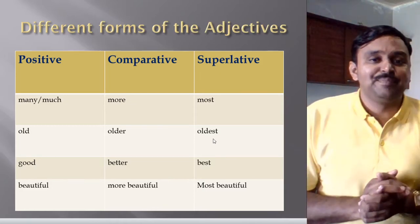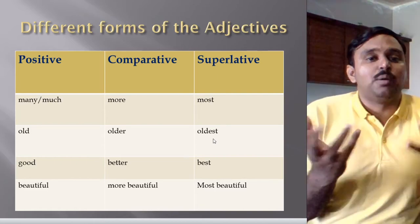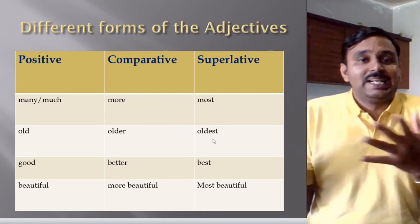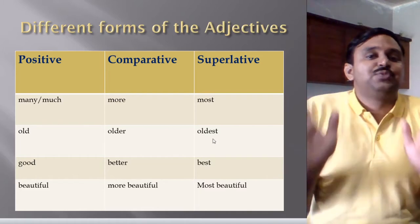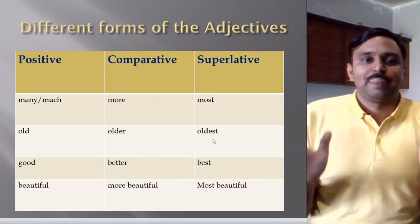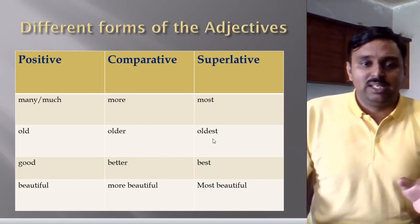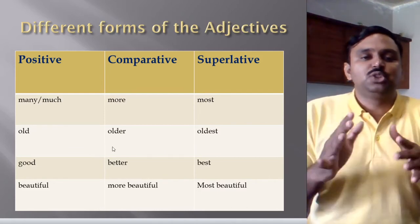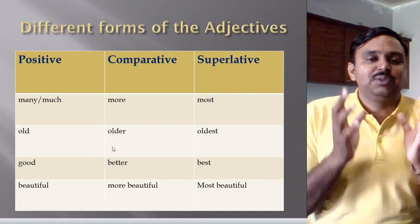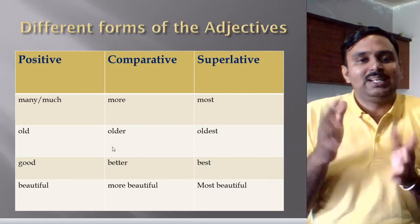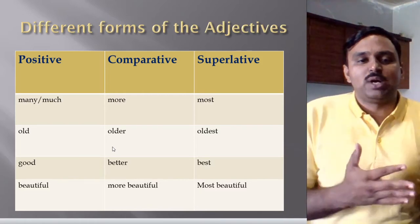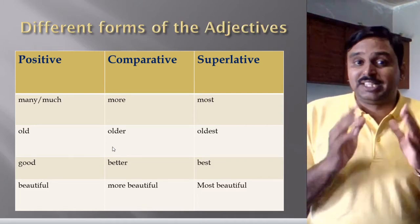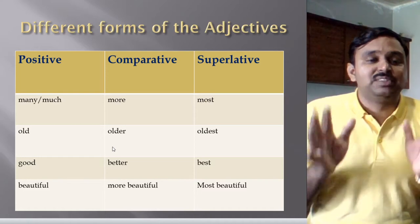Some children may get confused with verb forms. For example, 'go, went, gone' or 'talked, talked, talked' — these are verb forms, and adjective forms are different. Do not compare them together. Don't say that 'go, went, gone' will come in degrees — no, because they are verbs. Degrees use only adjectives and adverbs. So 'old, older, oldest' are adjective forms; we change them using the degree formula, but they are totally different from verb forms.